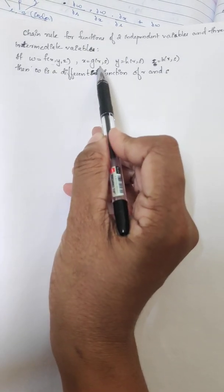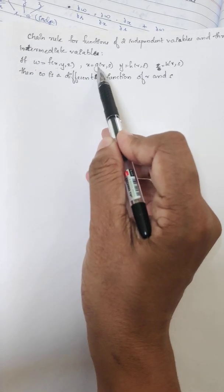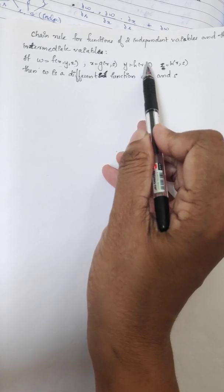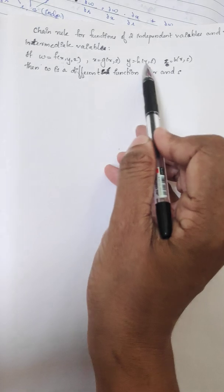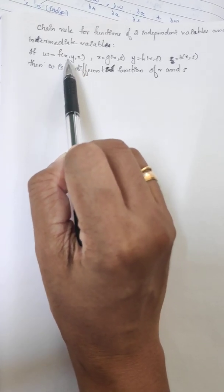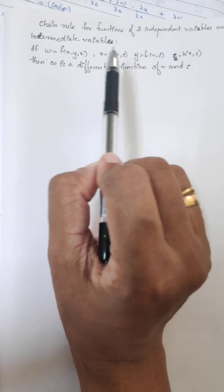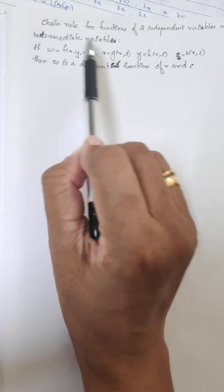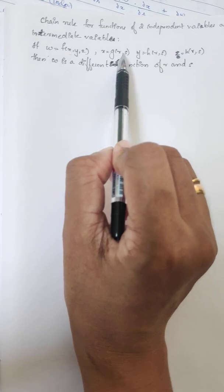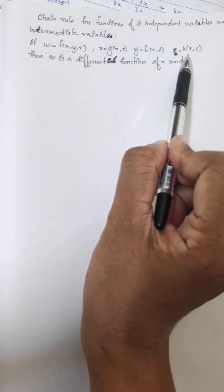That is, X, Y, and Z are functions of r and s. So the function W is ultimately a function of the independent variables r and s.